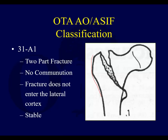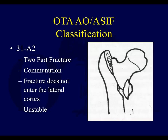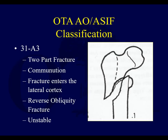31A2 is the same two-part fracture but with a lesser trochanteric fracture, so it's considered more unstable. The calcar is potentially disrupted, or at the very least the posteromedial cortex at the lesser trochanter is involved. It can still be fixed with compressive forces, but this is more of an unstable intertrochanteric fracture.